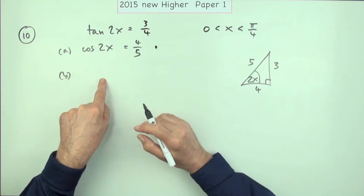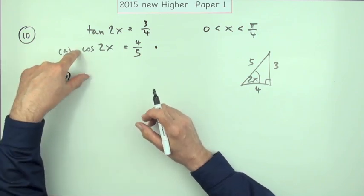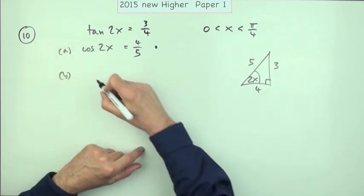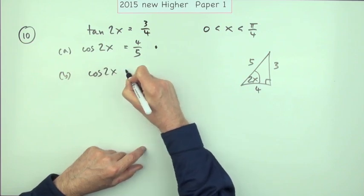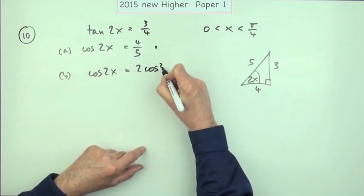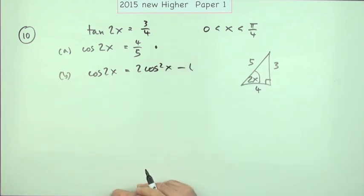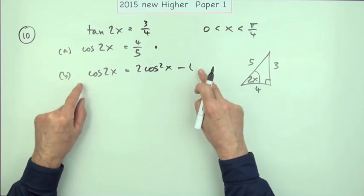Now the second part was what's the value of just cos x? So you think, well what's the connection between cos 2x and cos x? Well, you've got that cos 2x equals 2 cos squared x minus 1, and knowing to use that appears to be the first mark.